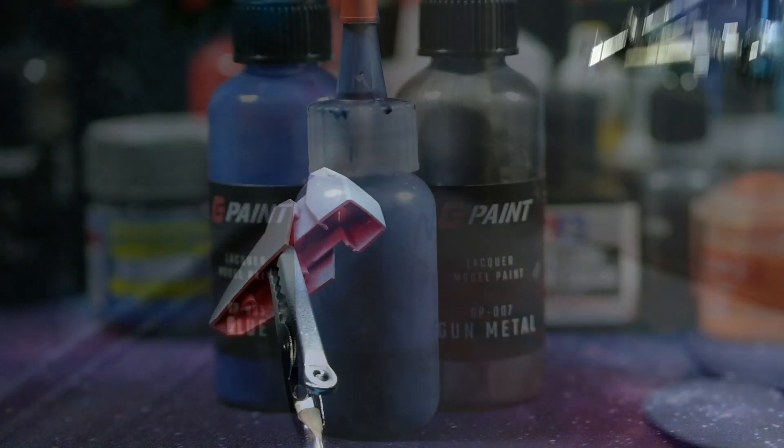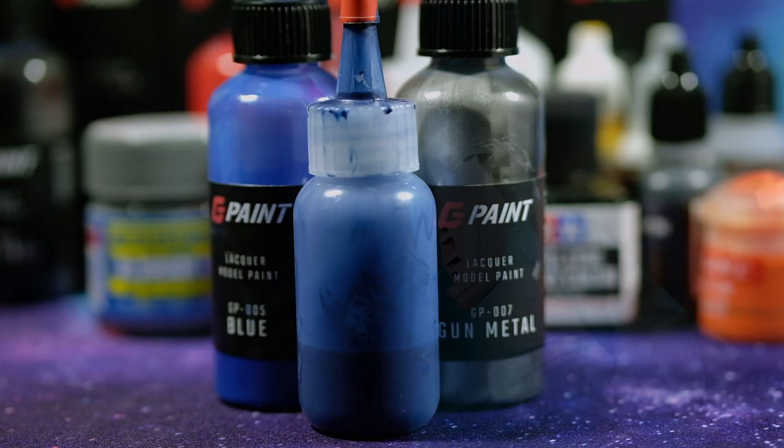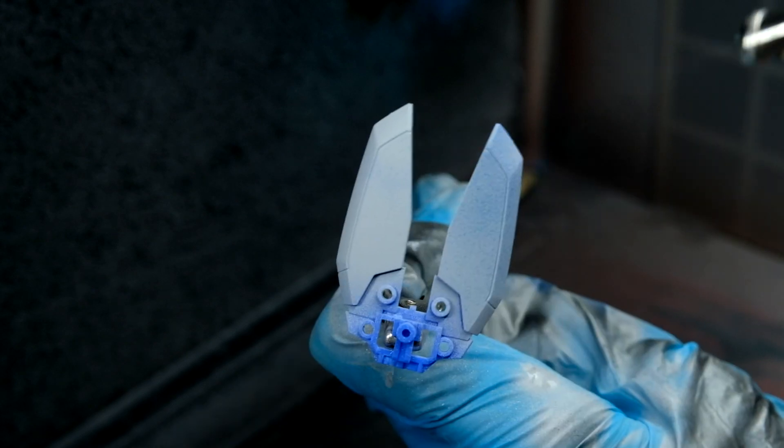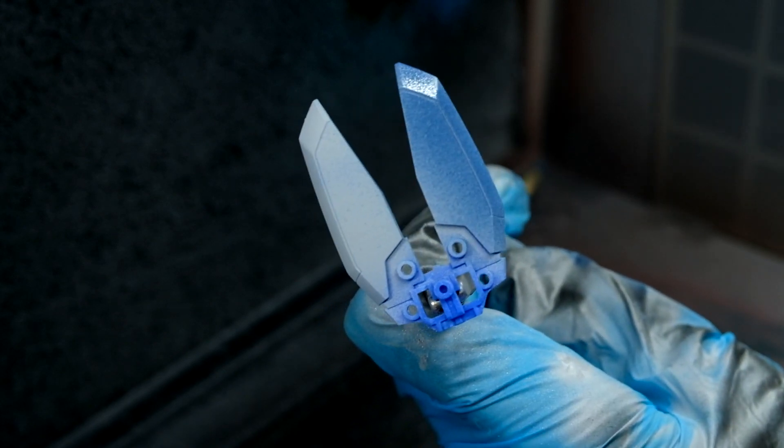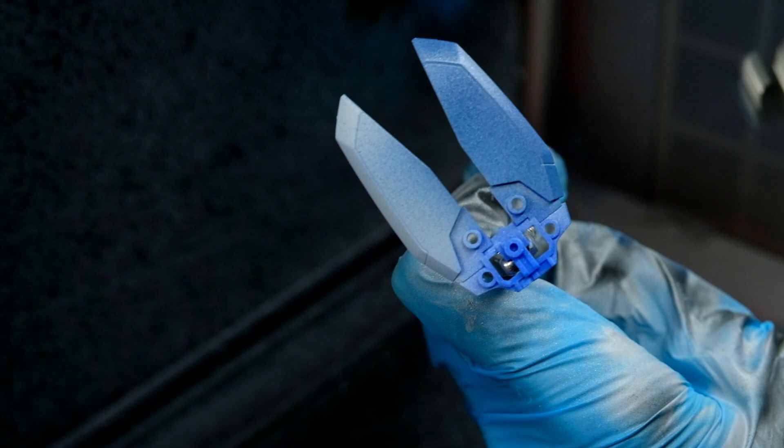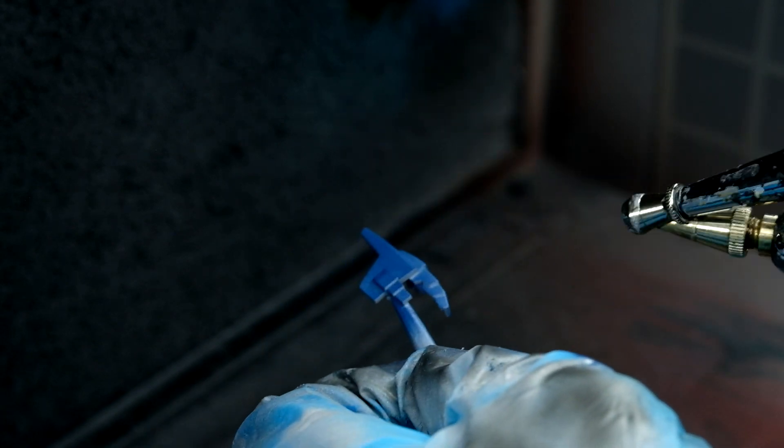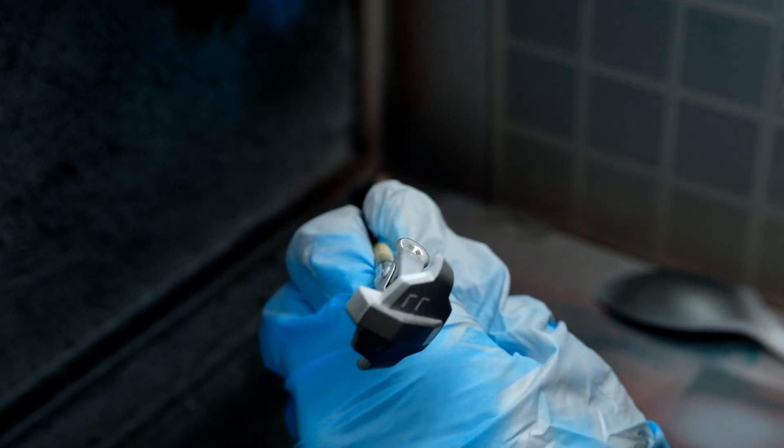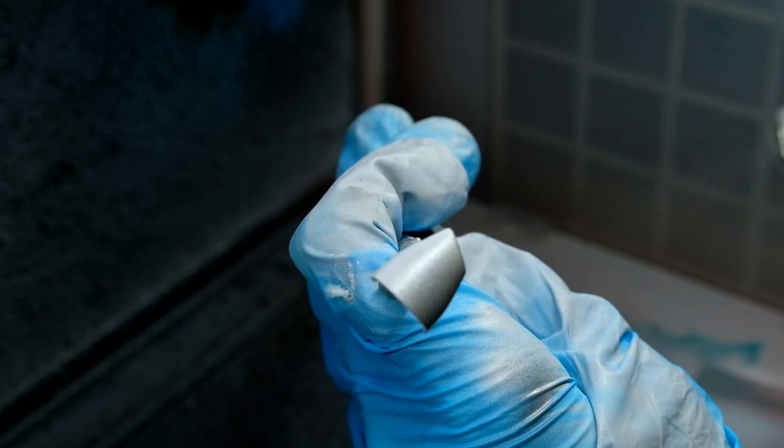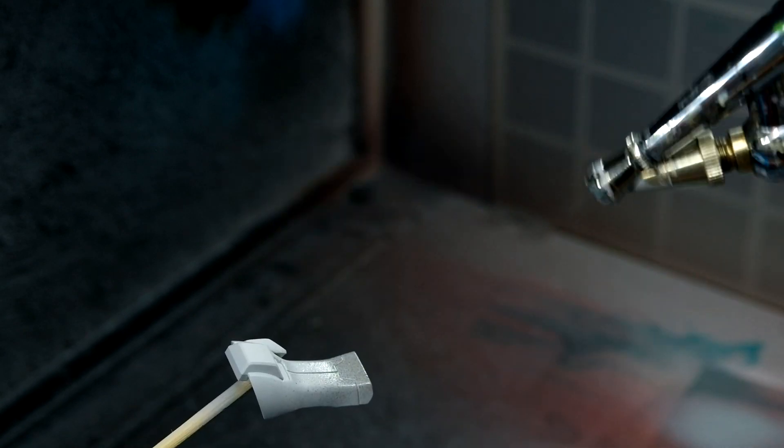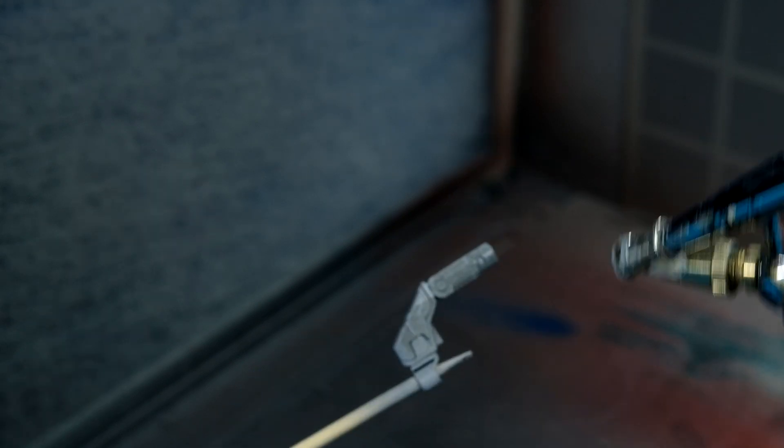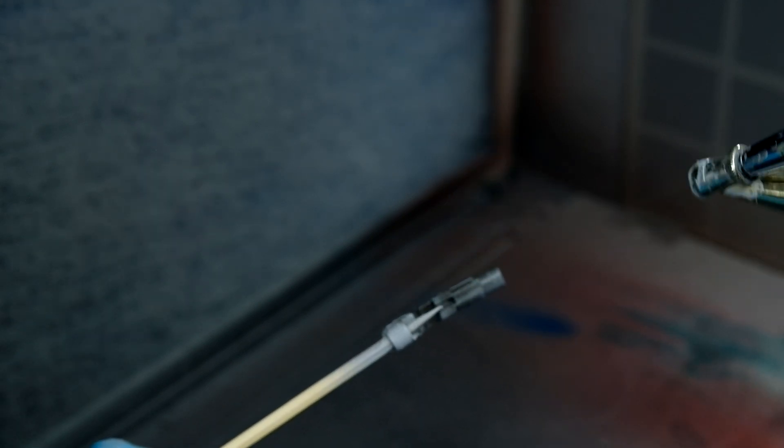For the blue sections, I'm using approximately a 50-50 mix of gunmetal and blue G-Paint. The main downside of mixing metallic colors like this is that they get a little desaturated, but I want the whole kit to have a metallic look to it, so I'm willing to make the compromise. Then the previously white sections of the kit are getting just straight up gunmetal. And the last straight up G-Paint we're using is dark iron for the underframe, abs, some of the wing armatures, etc.